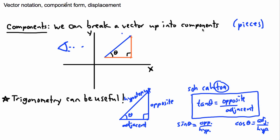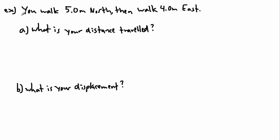We can, of course, go further than just breaking things up into components. We can start actually looking at displacement, so that's another nice quantity to look at. So let's say we look at this example here. You walk 5 meters north, and then you walk 4.0 meters east. What's your distance traveled? And the other question is, what's your displacement?